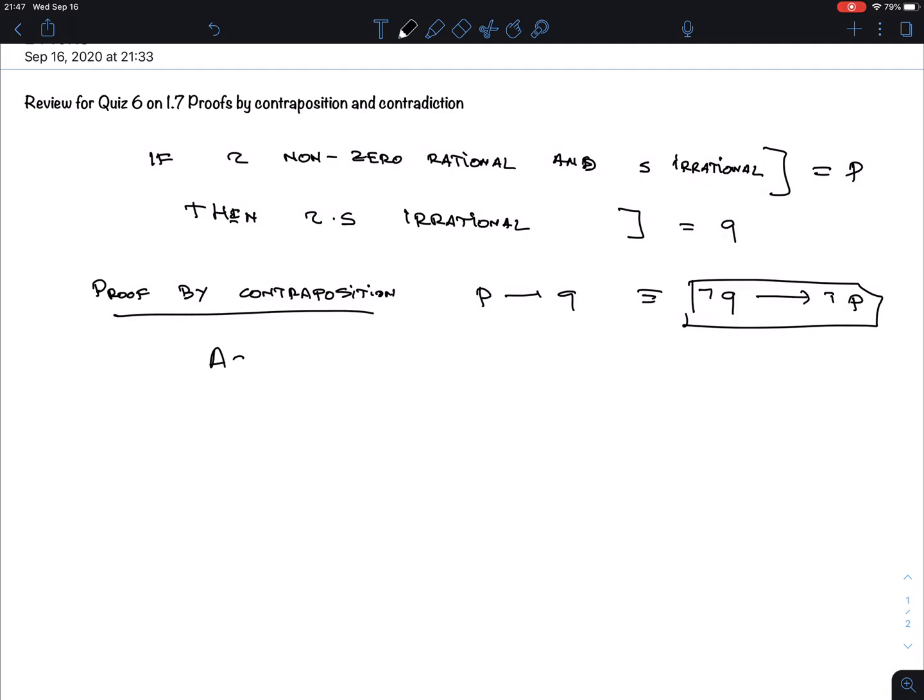So assume not Q. In this case what is that? You can do the intermediate steps. Q is RS is rational. Not Q means that RS is irrational. So not Q is RS is irrational. That's good because being rational I know what that means.